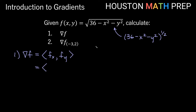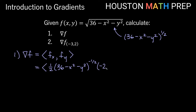For partial fx: the one-half comes out front, we keep the inside (36 - x² - y²) and the power goes down by one to negative one-half. For the chain rule with respect to x, the 36 and y² are constants — so we only care about -x², whose derivative is -2x. We'll clean that up in a moment.